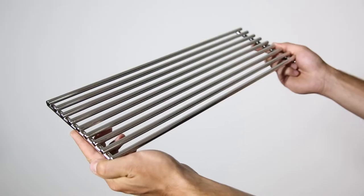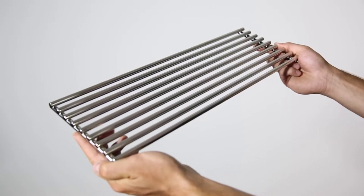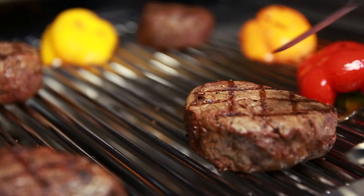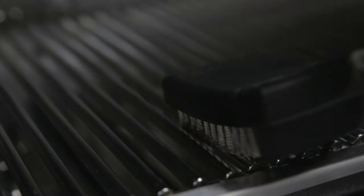Broil King's durable stainless steel cooking grids are crafted with heavy-gauge 9mm rods. This design makes them both easy to use and easy to clean.